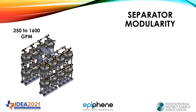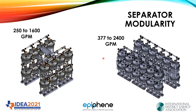So let's look at the modularity of these filter tanks. We can do a simple two-tank system, a four-tank system, a six-tank system, an eight-tank system, or take the eight tanks and put them in parallel. Depending on the flux we are looking for and the micron removal, this can go anywhere from 250 to 1,600 gallons a minute. Another similar configuration using pairs gives us basically 400 to 2,400 gallons a minute with 24 tanks.